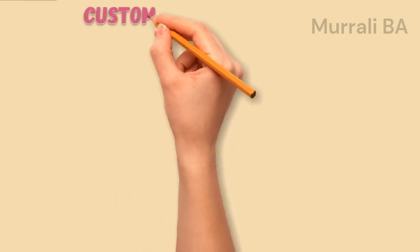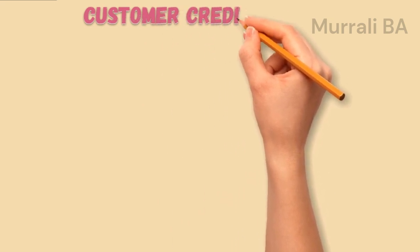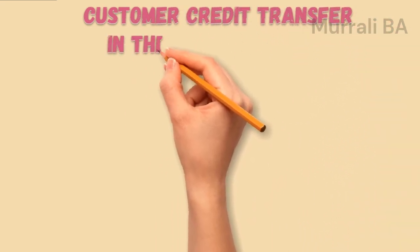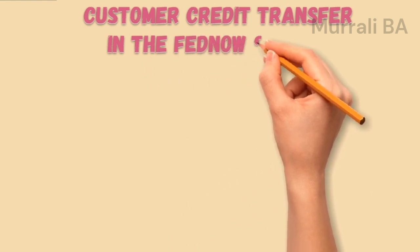In today's video, we are going to explore how the customer credit transfer happens in the FedNow Clearing. In other words, how the ISO 20022 message PACS.008 is being used for the customer credit transfer. In addition to this, we will understand the various other messages involved in this end-to-end payment flow of FedNow Service.